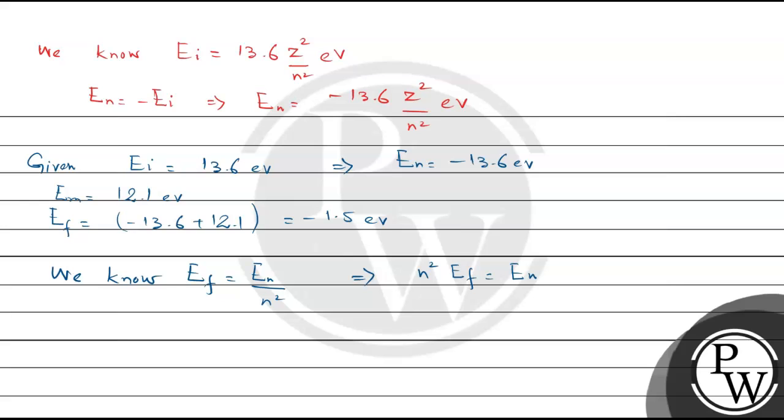E_f = 1.5, so n² × 1.5 = 13.6, that implies n² = 13.6/1.5 = 9.06, which we take as 9, so n = 3.